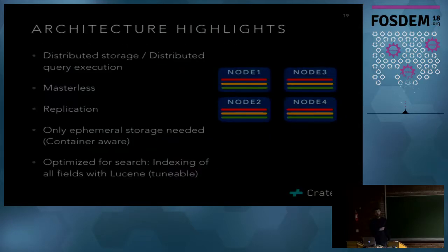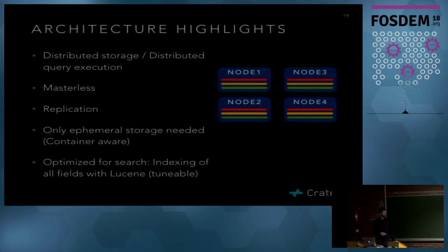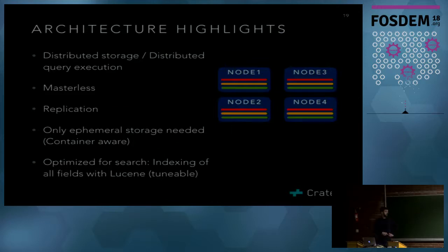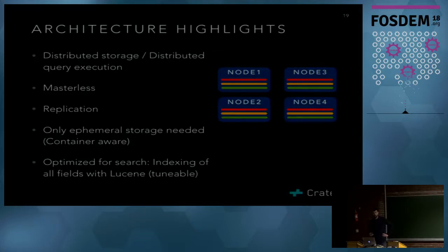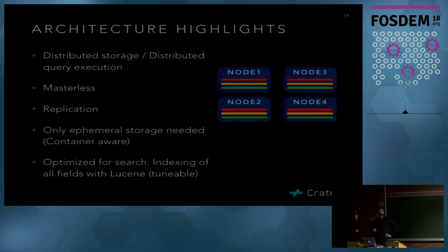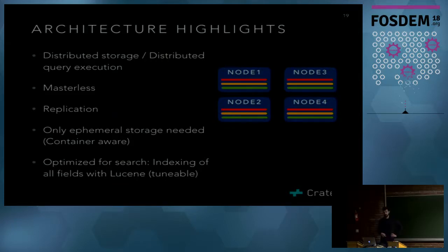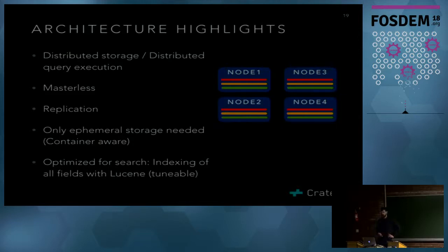Highlights from this architecture: you have distributed storage and distributed execution. You are masterless — which doesn't mean there's no master, there's always one to coordinate, but any node can potentially be master. If the master fails, another takes over. We have replication, we don't depend on any external storage system — only local storage. So if you use containers and want to shut one down and bring another up, you can do that without worrying about data persistence, as long as you have replication turned on. It's highly optimized for search with Lucene indexing all tables by default.